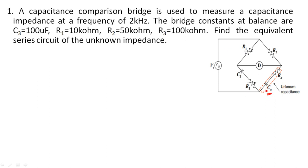In a capacitance comparison bridge, the unknown capacitance value Cx is calculated using the known capacitance value C3, and Rx is calculated in terms of the resistor values R1, R2, and R3. The unknown component is indicated in red. Here, a capacitance comparison bridge is used to measure a capacitance impedance at a frequency of 2 kilohertz.